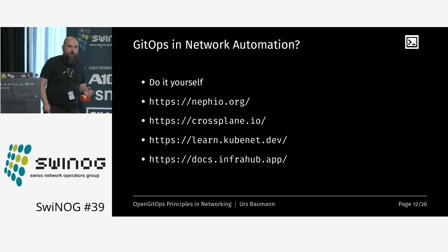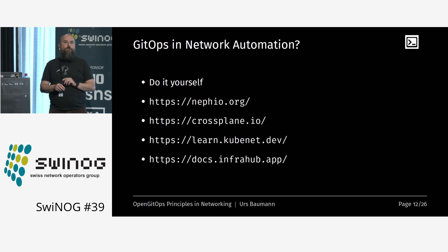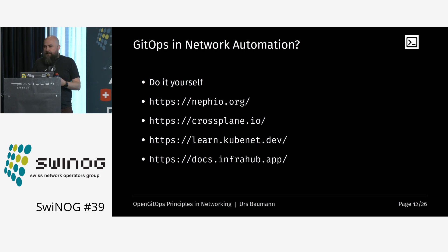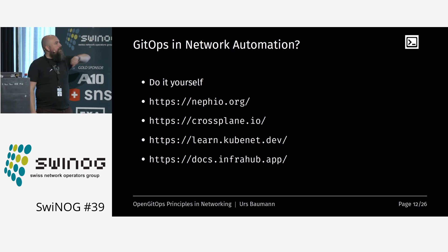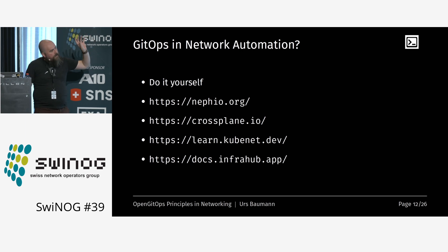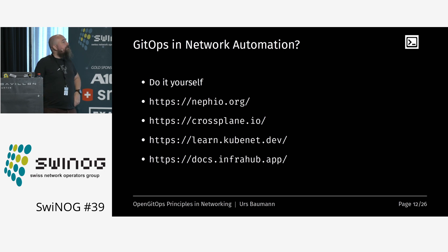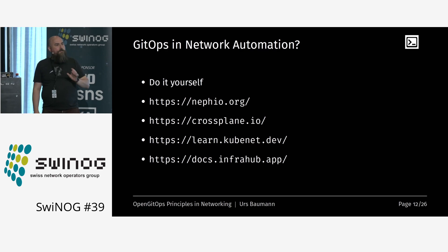GitOps in network automation: one way is to build everything yourself — take the tools and build your solution. There are also two projects that work with Kubernetes. I'm not the biggest fan of them, maybe I haven't used them enough, but Nephio and Crossplane work with Kubernetes and are therefore kind of easy to use with GitOps via Argo CD or Flux CD.